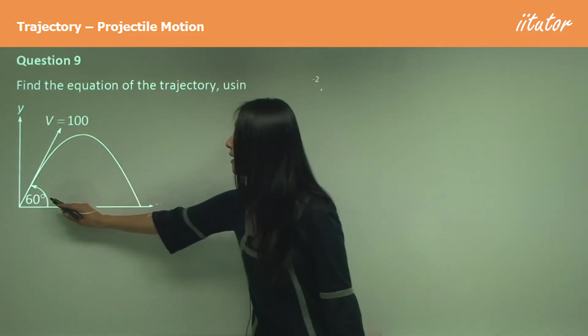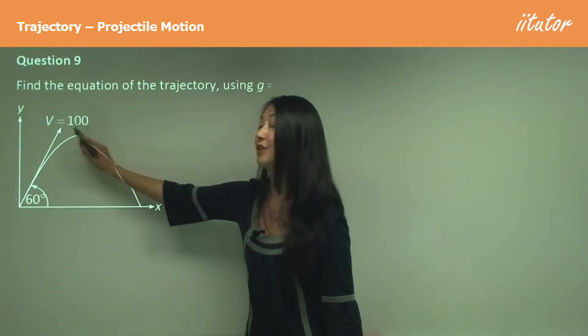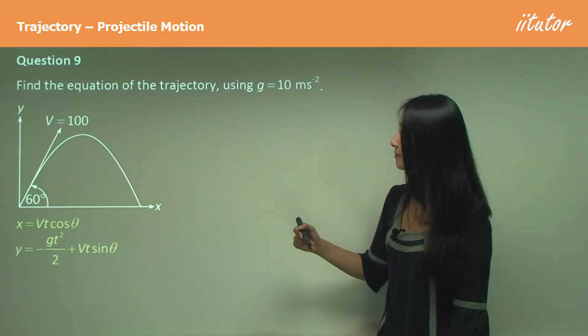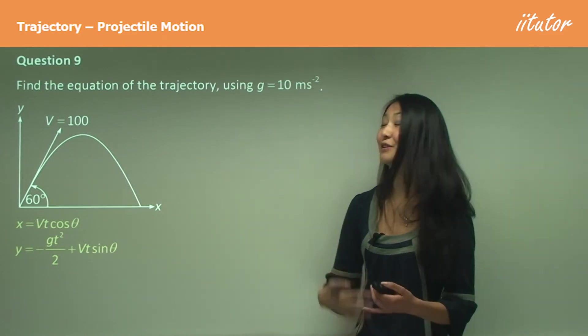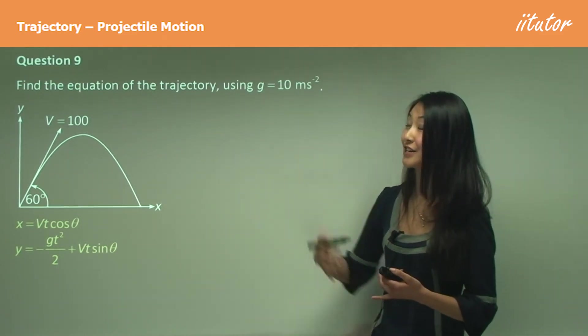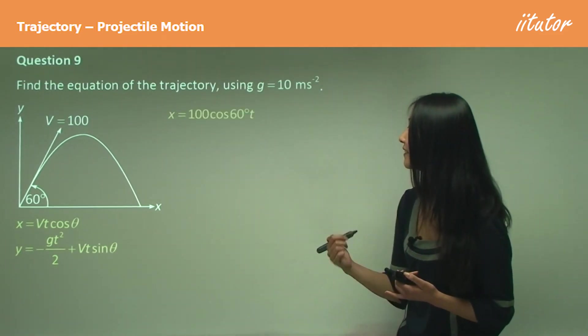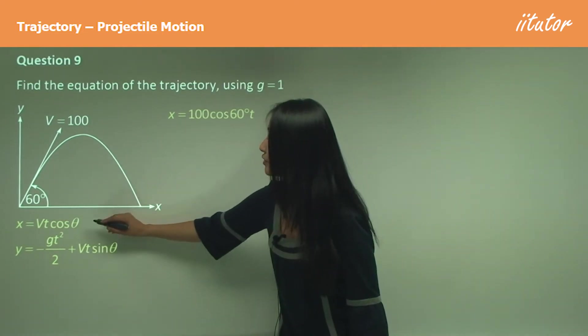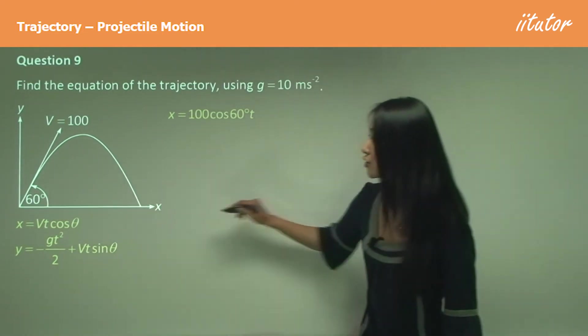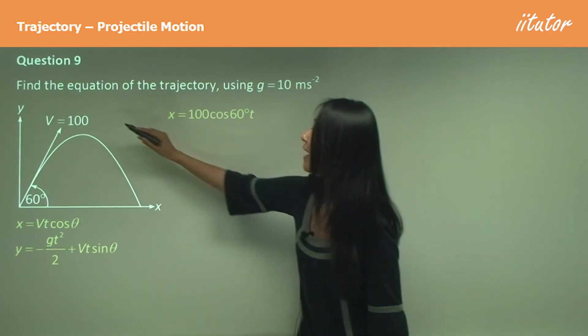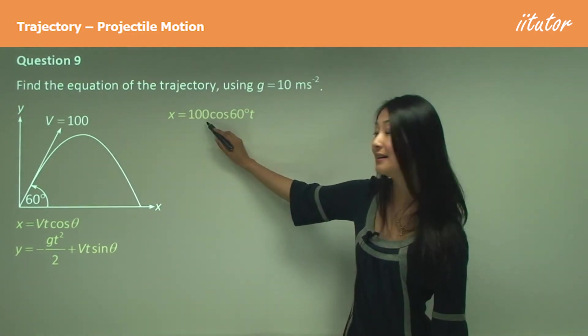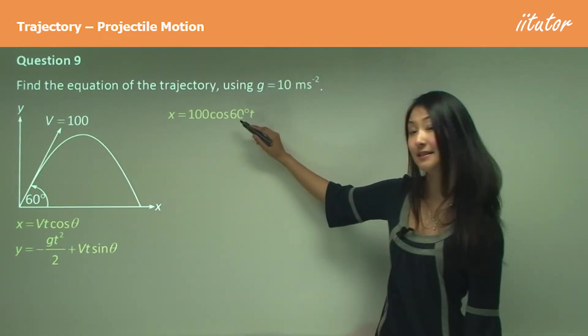Remember we're just putting this here because we've already explained that, but in an exam situation you would have worked it out previously. So using this, this here is our horizontal motion, so horizontal displacement. We have 100, substitute that in, and cos θ is cos 60 degrees, and we'll just put t over here: x equals 50t.